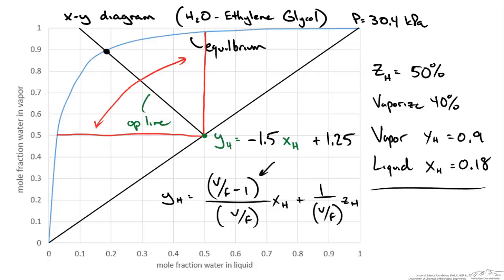So when we perform flash distillation our operating conditions will fall between these two limits. Hopefully this gives you an idea of how we derive the operating line for flash distillation and how to use it with an xy equilibrium plot to carry out the necessary separation calculations.